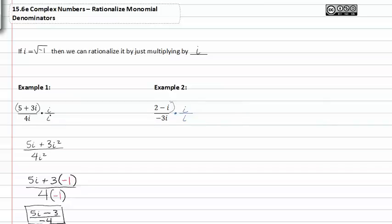When we do this we have to remember to distribute to both terms in the numerator. We get 2i minus i squared all over negative three i squared. When we do this we can simplify wherever we see an i squared. We can substitute in a negative one.